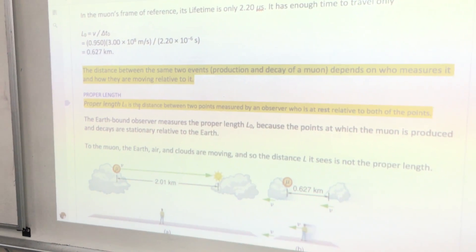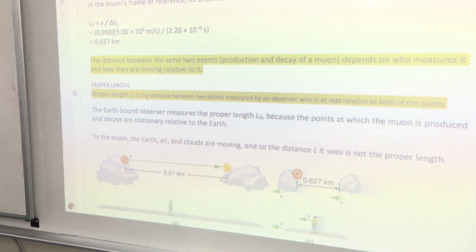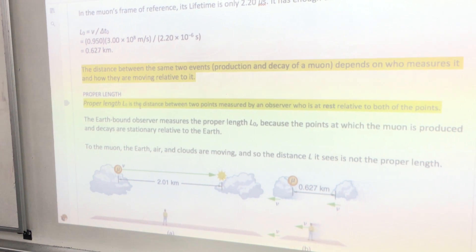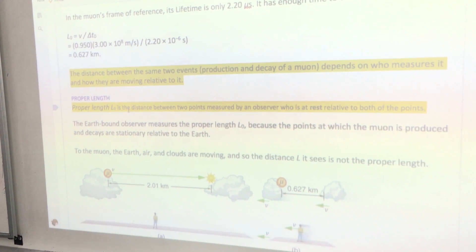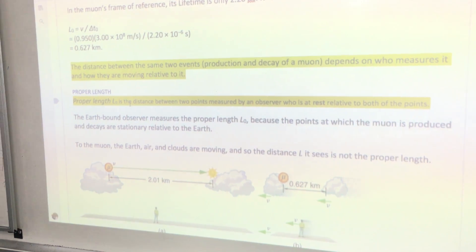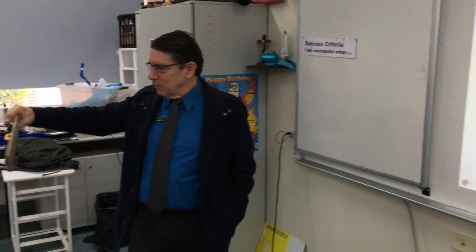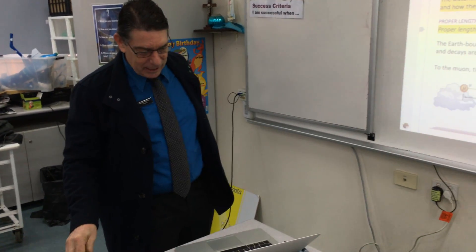So we're going to introduce this concept called proper length. Proper length is the distance between two points measured by an observer who is at rest to both of those points. What is the proper length of my ruler as considered for you and I because we're both stationary at the moment? One metre. So that's our proper length and we know that that's the case.